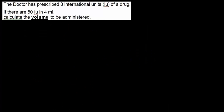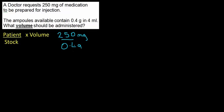Question five: a doctor requests 250 milligrams of medication for injection. The ampoules available contain 0.4 grams in 4 millilitres. What volume should be administered? Starting with the formula and unpacking the question: I want to give the patient 250 milligrams; in stock I have 0.4 grams; and it's in 4 millilitres.